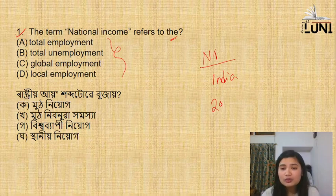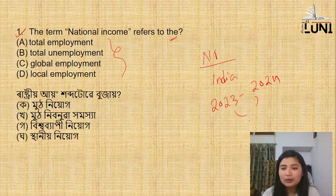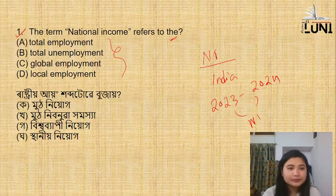Suppose in 2023 or 2024, how much income is in India? What do we say - unemployment, global employment, or local employment?